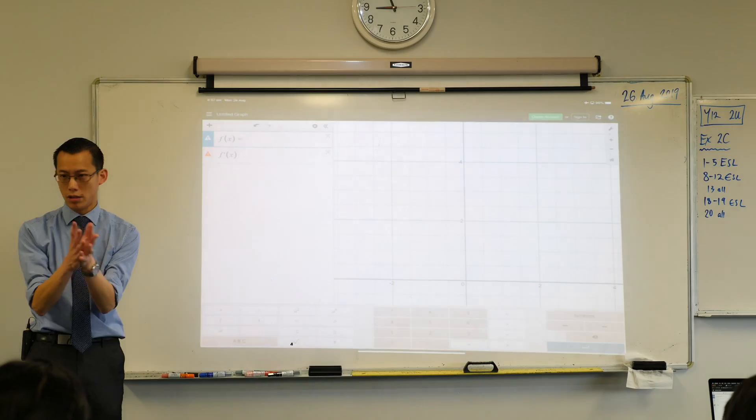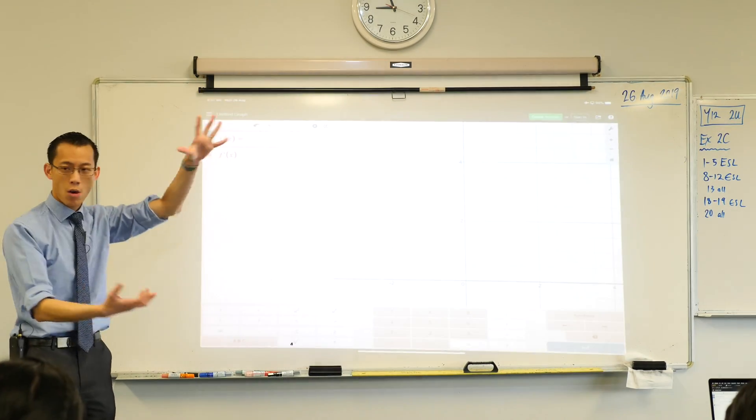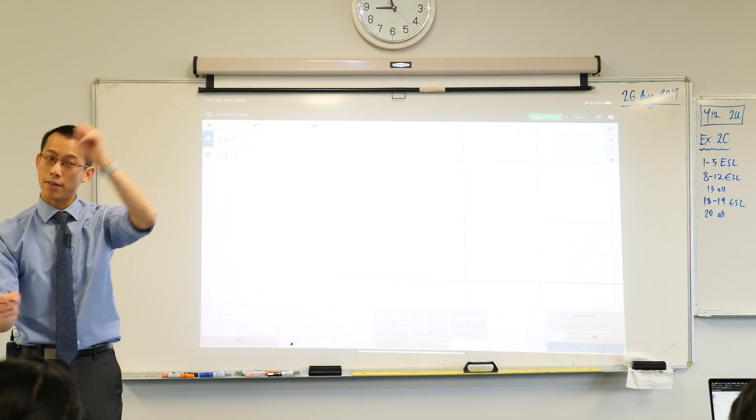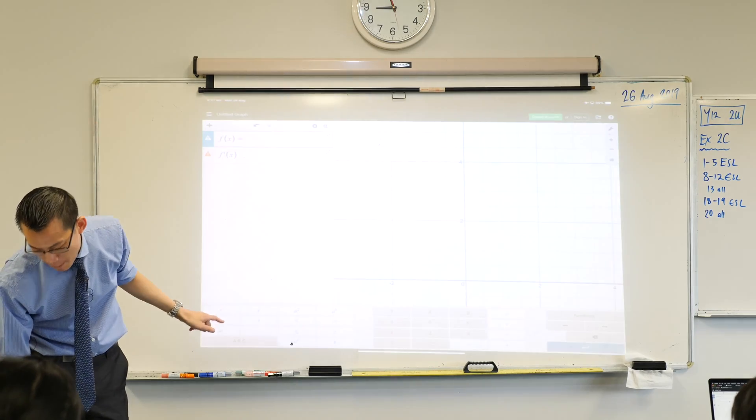And now, instead of having a polynomial, x to the power of a thing, x to the power of some number, what I want us to do is reverse that. So we want to have not x to the power of something, but something to the power of x. Now that's something that's going to be really important.